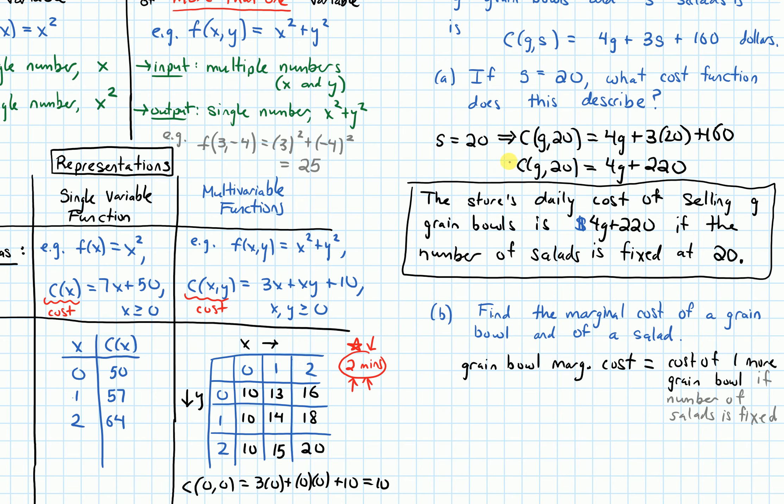So let's just play around with a few values. And then eventually it'll become clear what part of the function do we look to, to tell us this marginal cost. So up above, we had fixed the number of salads to 20. So let's keep that the case. Let's keep the number of salads 20.